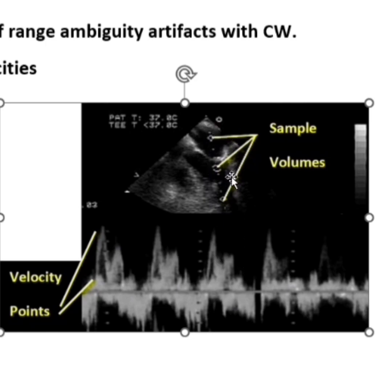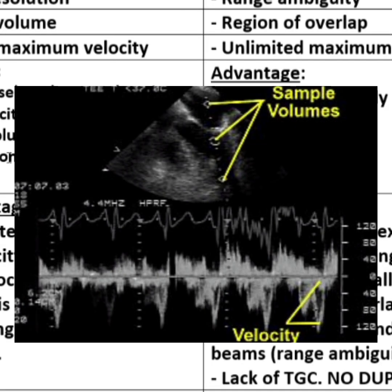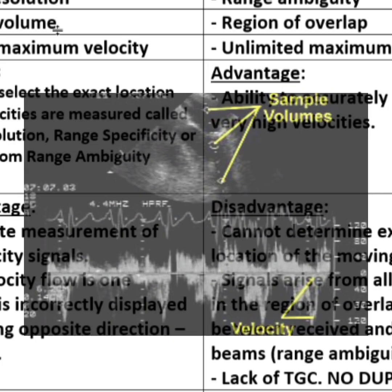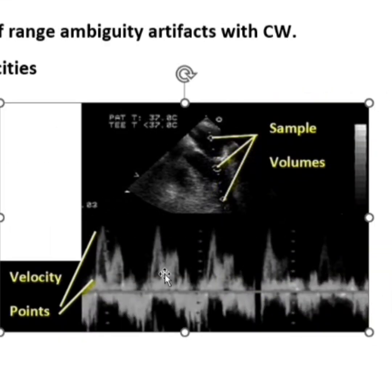What you get with continuous wave Doppler is range ambiguity. Looking at all these other waveforms planted inside the spectral waveform, you're getting information from all the way up and down the cursor instead of just the sample gate. This is the E wave, this is the A wave, but we're getting all this extra information that's really not necessary for what we're trying to look at.